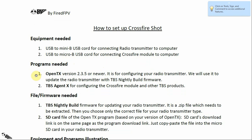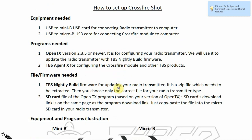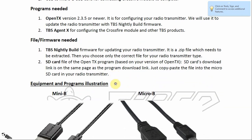The programs you need are: first, the OpenTX program — you will need version 2.3.5 or newer for configuring your radio transmitter — and then the TBS Agent X program for configuring your CrossFire module and other TBS products. The files and firmware needed are the TBS nightly build firmware for updating your radio transmitter and the SD card file.